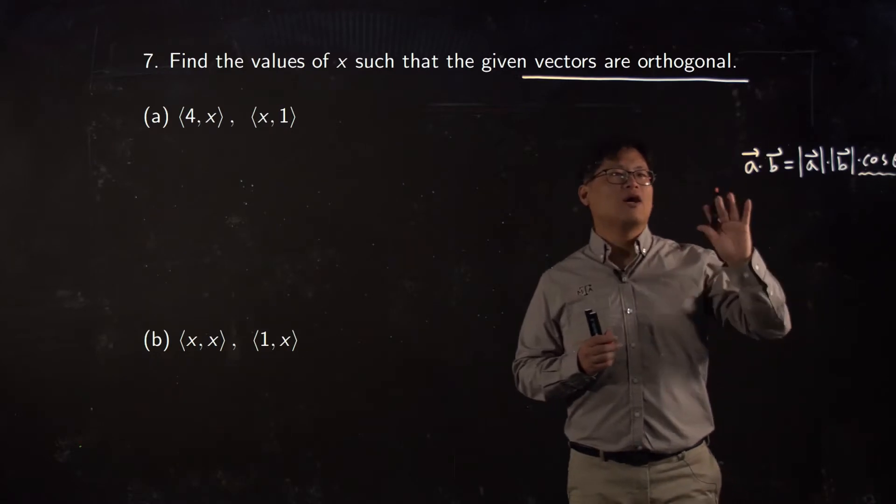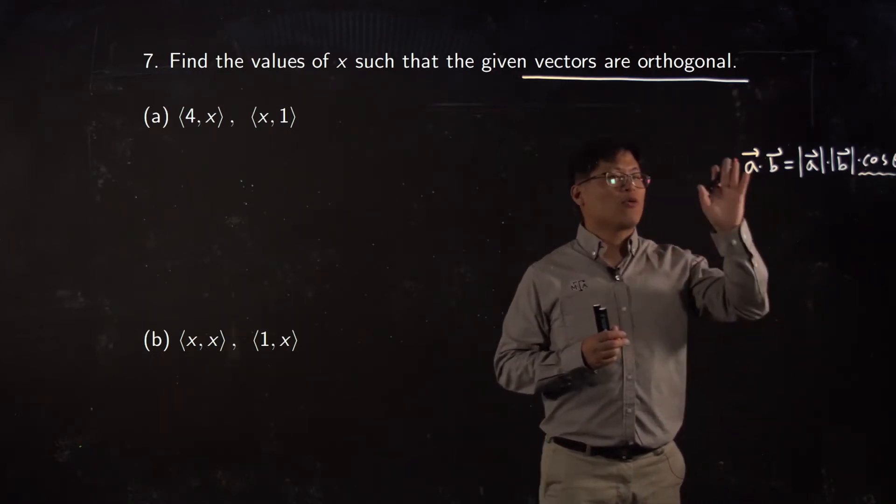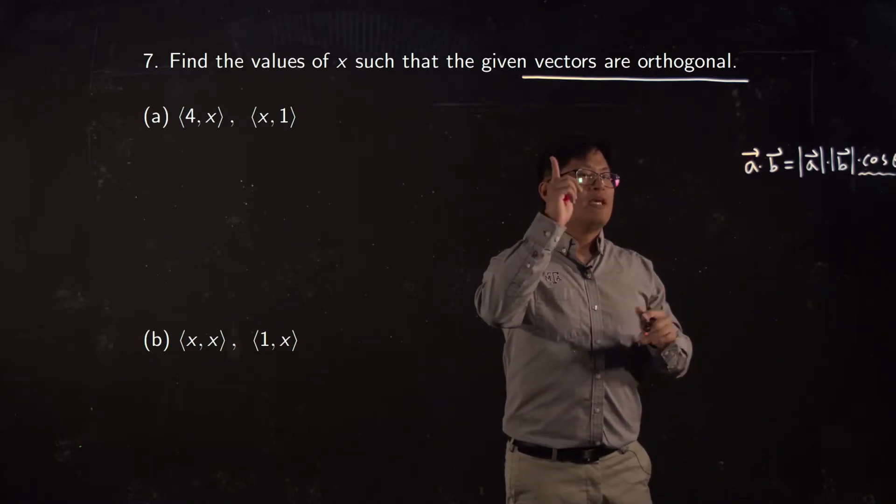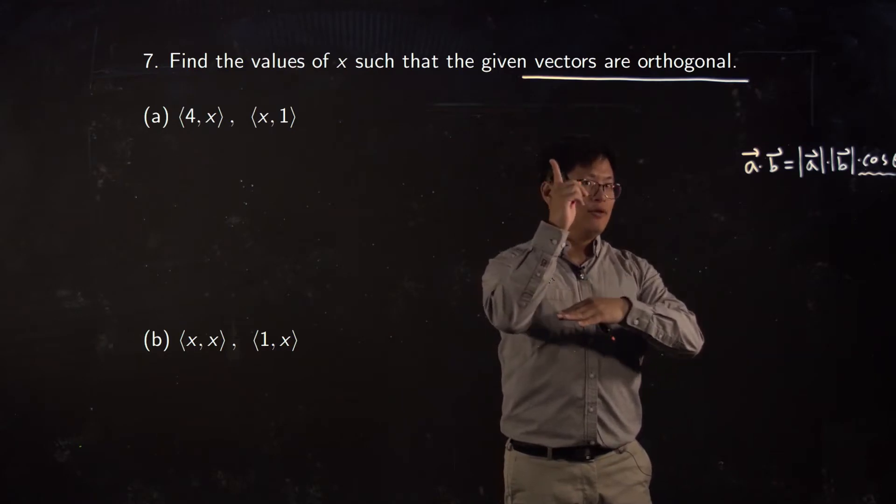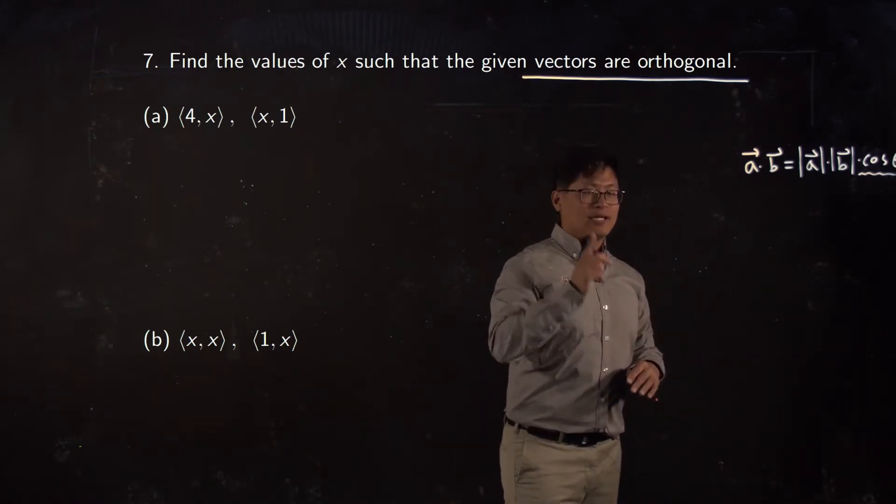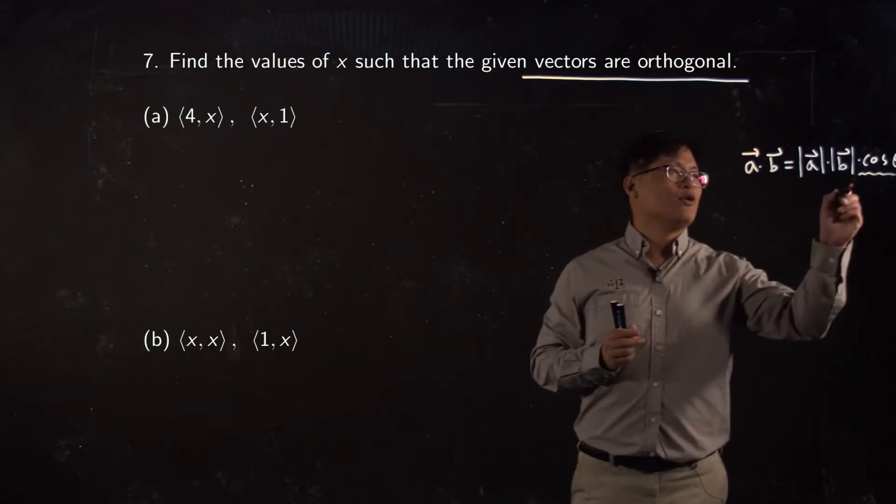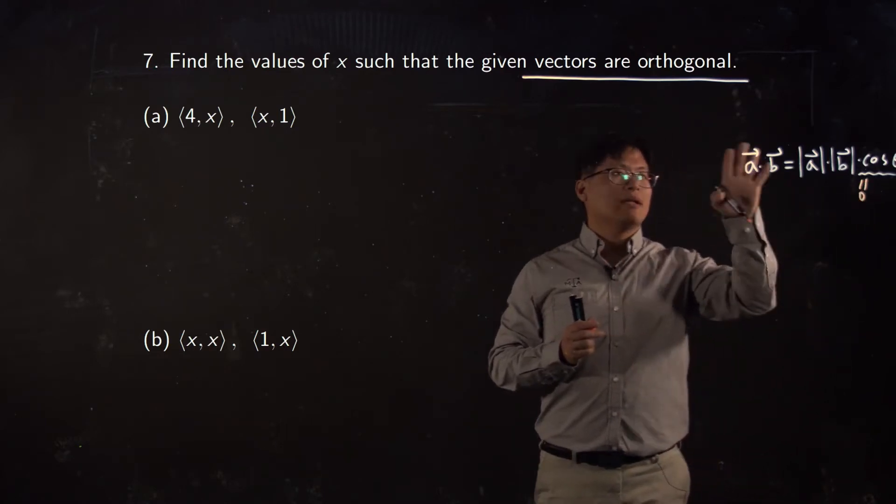Even if it's out of screen, don't worry about it. So cosine theta, okay? Orthogonal means 90 degrees. Do you remember cosine 90? Cosine 90 equals zero.